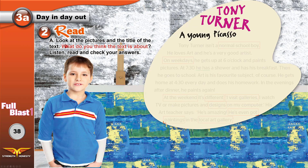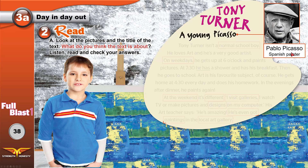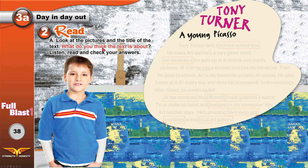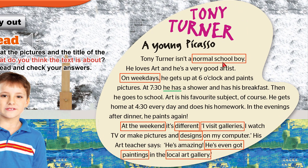Now read: look at the pictures and the title. This is the title of the text — what do you think the text is about? Let's read: Tony Turner — a young Picasso. Picasso is a famous painter and artist from Spain who lived a long time ago. So I think the text is about a boy who is an artist. Tony Turner isn't a normal schoolboy — normal means just like everyone else.